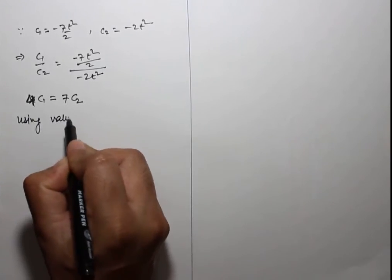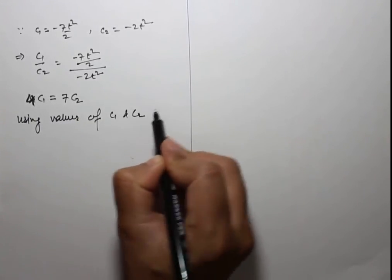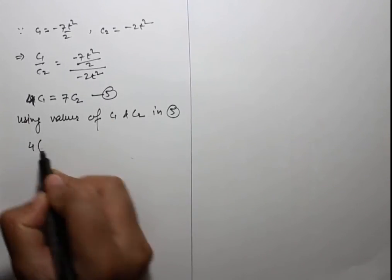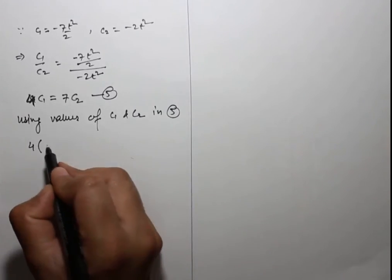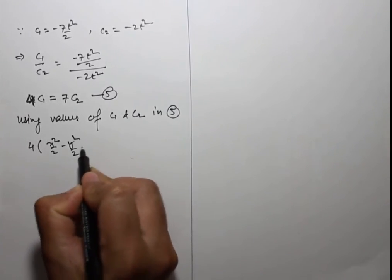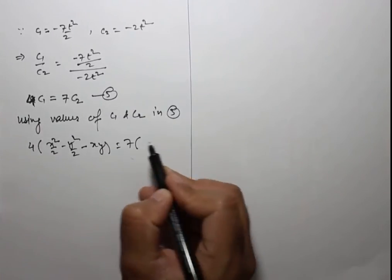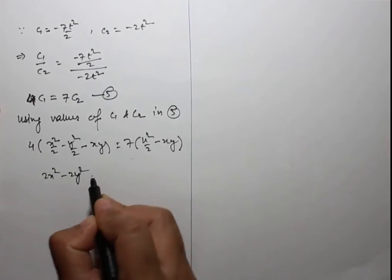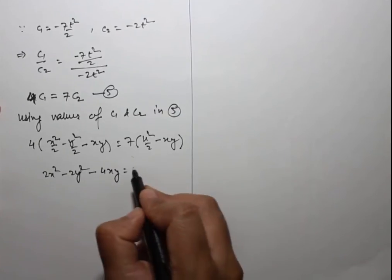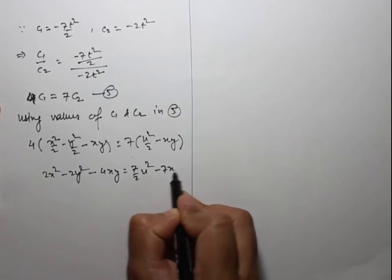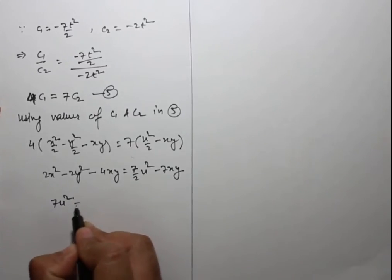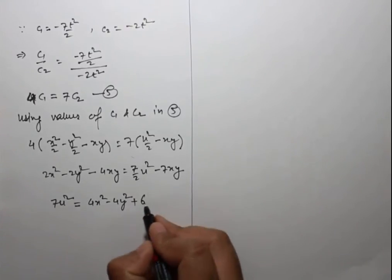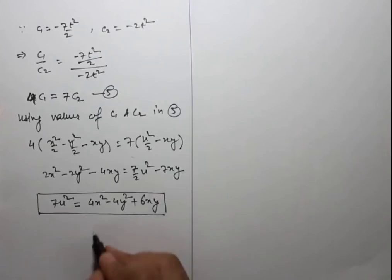Using the values of c₁ and c₂: from c₁ = x²/2 - y²/2 - xy and c₂ = u²/2 - xy, we get 2x² - 2y² - 4xy = 7u²/2 - 7xy, which gives 7u² = 4x² - 4y². This is the required solution.